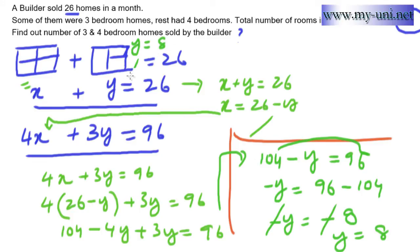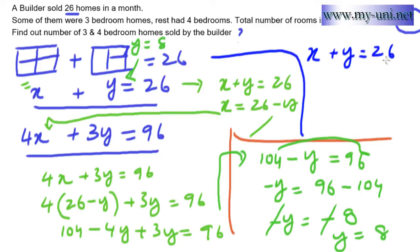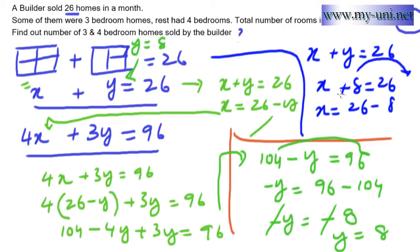Now we substitute the value of y back into the first equation. x plus y equals 26, and since y equals 8, we get x equals 26 minus 8, which equals 18. So the number of four-bedroom houses sold is 18 and the number of three-bedroom houses sold is 8.